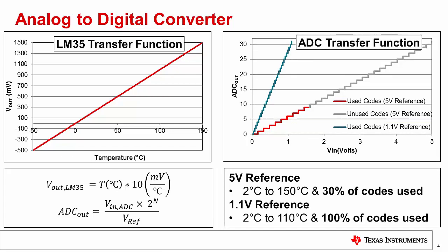The line in blue, now on the right-hand graph, shows that we use all of the possible codes when using a 1.1 volt reference. But the downside is that because this voltage is less than our maximum expected output, we can no longer go up to the maximum 150C.